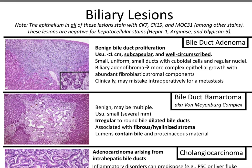Bile duct hamartoma, also known as von Meyenberg complex. This is also benign; it may be multiple and is usually small, around several millimeters. Histologically, you'll have these irregular to round dilated bile ducts associated with hyalinized fibrous stroma. The lumens can contain bile, which can be inspissated, and proteinaceous material. Bile duct adenoma and bile duct hamartoma may be given to you intraoperatively on frozen sections in a patient with pancreatic cancer undergoing a Whipple. If the frozen is metastatic pancreatic cancer, they'll abort the Whipple; if it's bile duct adenoma or hamartoma, they'll continue. One tip: bile duct adenoma and hamartoma will respect the adjacent hepatocytes, whereas pancreatic adenocarcinoma won't and will be infiltrative.